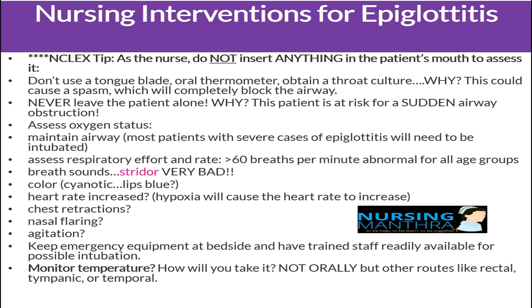Nursing interventions include maintaining a patent airway and assessing respiratory status and breath sounds. Assess temperature by the axillary route, not the oral route. To prevent spasm of the epiglottis and airway occlusion, no attempt should be made to visualize the posterior pharynx or take an oral temperature. Prepare the child for neck x-ray to confirm diagnosis, administer IV fluids, maintain NPO status, do not leave the child unattended, do not force the child to lie down, administer antibiotics, analgesics, antipyretics, steroids, and humidified oxygen as prescribed. Have resuscitation equipment readily available and be prepared for endotracheal intubation if needed.